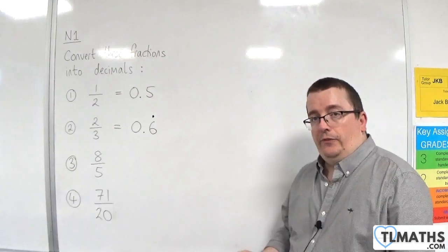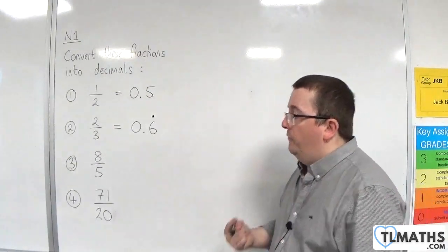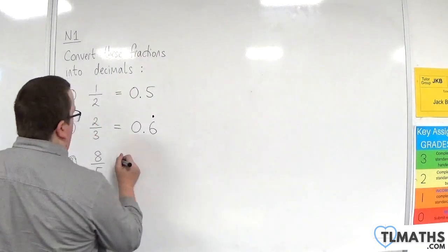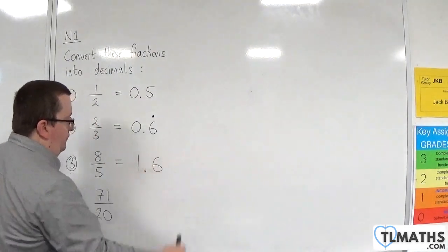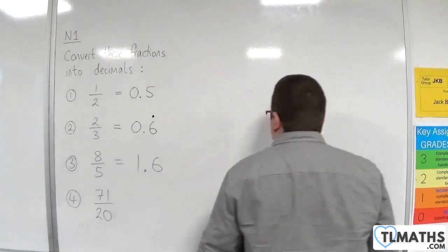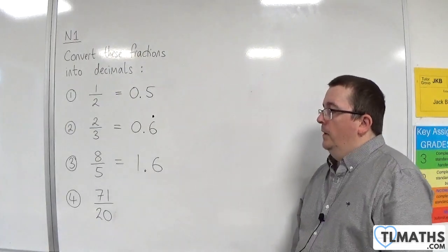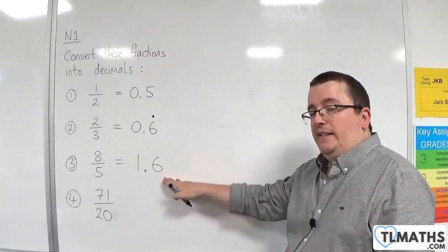So, 8 fifths, 8 divided by 5, and we should get 1.6. OK? So, we have a terminating decimal there.